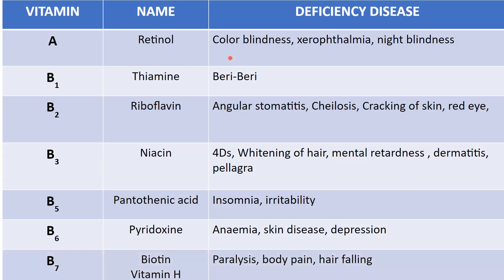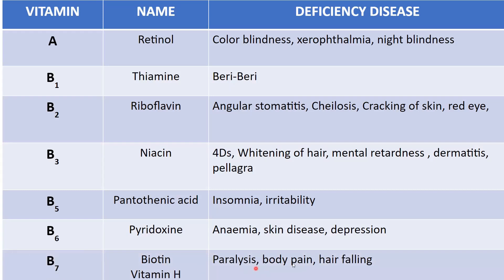Next is vitamin B7, commonly known as biotin — it also has another name, vitamin H. Biotin is necessary for the metabolism of carbohydrates, fats, and amino acids. Deficiency causes paralysis, body pain, and hair loss.